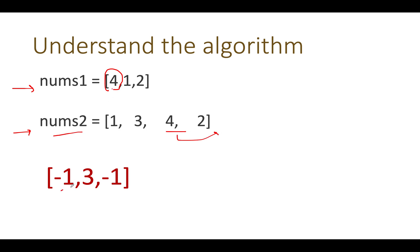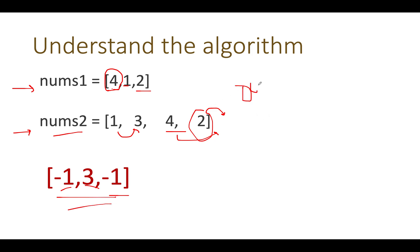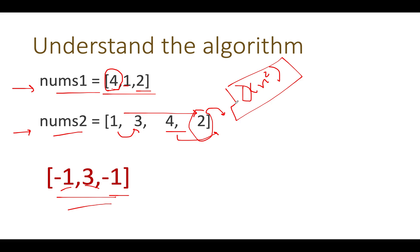For four, there is no higher element to its right, so we assign minus one. For one, the next higher element is three, so we assign three. For two, there is no higher element on its right, so we assign minus one. The basic naive approach that comes to mind is: for each element, search to its right for the immediate next higher element, and as soon as you find it, update your result array. The time complexity for this approach is O(n²), since for each element in nums1 you iterate through nums2. This is too high, so we want to reduce it.